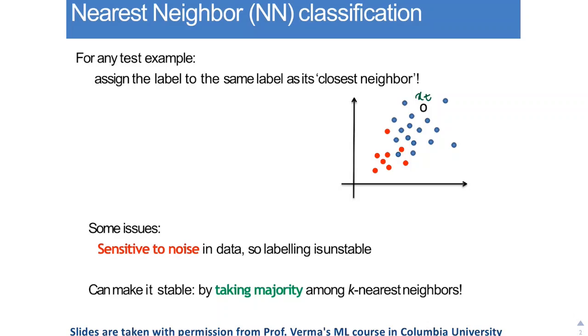We have a test point XT. What we do is calculate the distance of this test point with all the points in the data set. And the one with the smallest value of distance is our nearest neighbor.